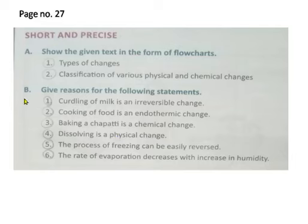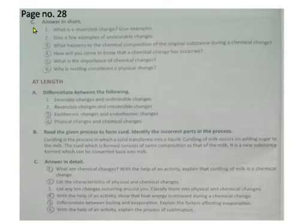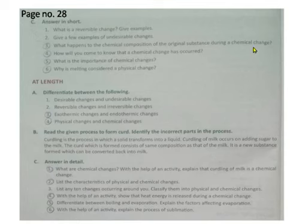So in question number B, give reason — all are for revision work. Come to page number 28, C: answer in short. Question 3: what happens to the chemical composition of original substance during a chemical change? Question 4: how will you come to know that a chemical change has occurred? Question 5: what is the importance of chemical changes? Question 6: why is melting considered a physical change?